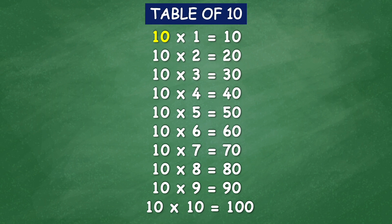Table of 10: 10 times 1 equal 10, 10 times 2 equal 20, 10 times 3 equal 30, 10 times 4 equal 40, 10 times 5 equal 50.